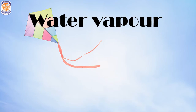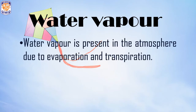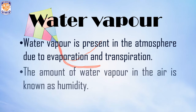Moving on to another constituent of air — water vapour. Water vapour is present in the atmosphere due to evaporation and transpiration. Sun rays heat up water in bodies such as oceans and rivers, converting it into water vapour that rises into the atmosphere. Transpiration is the process by which plants lose excess water as water vapour. The amount of water vapour in the air is known as humidity.